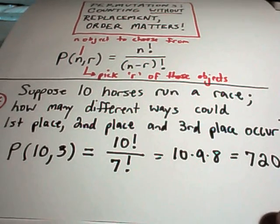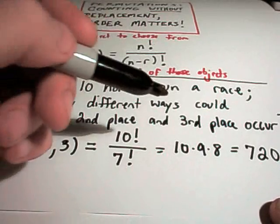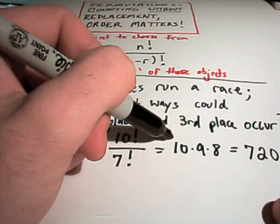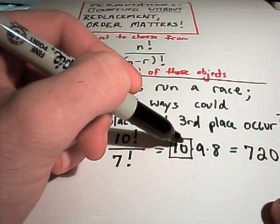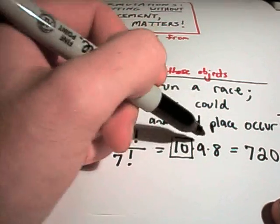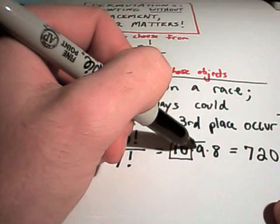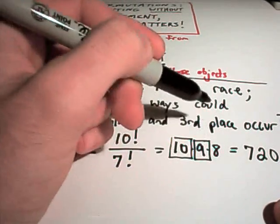So there's 720 different ways that ten horses could finish the top three places. And notice really all you're doing is using the multiplication principle here. If you think about the number of ways that the first horse could finish, well, there's ten possible horses. Well for second place, one of them is already finished, there's only nine horses left.